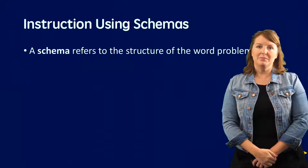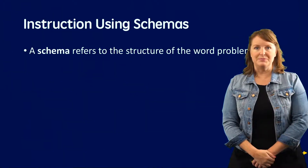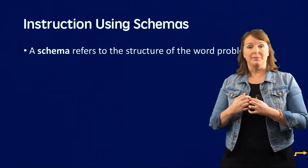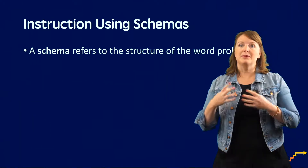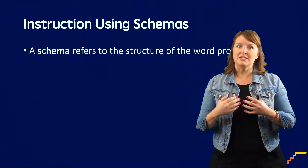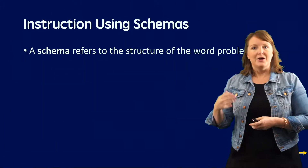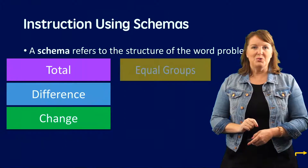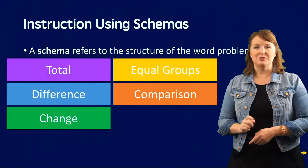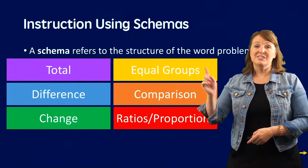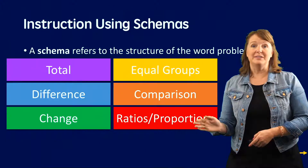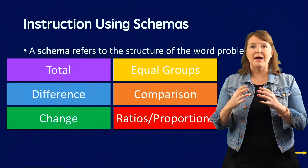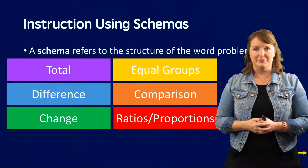We're going to think about word problem solving by thinking about our word problem schemas. A schema refers to the structure of the word problem, and there are six schemas we regularly see used in the middle school grades: total, difference, change, equal groups, comparison, and ratios and proportions. There are stair tailors about all of these that go into much more detail, but today we're going to see how we combine these in multi-step word problems.